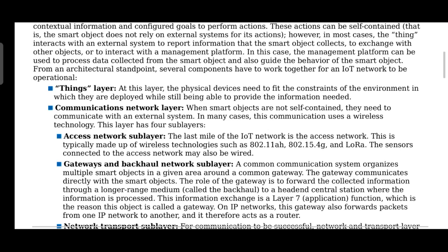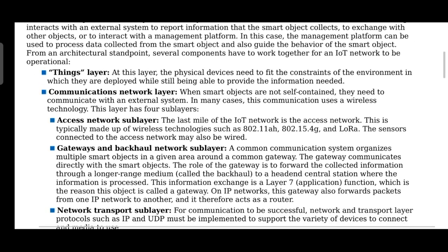Next is the communication network layer. When smart objects are not self-contained, they need to communicate with external systems. The sensors, actuator circuits, and all such components need to communicate among themselves and with other devices through the communication network layer. This layer can further be divided into sub-layers.